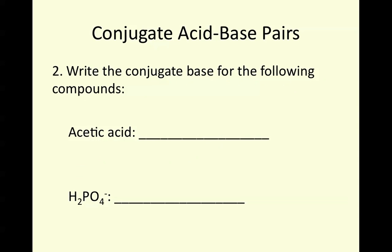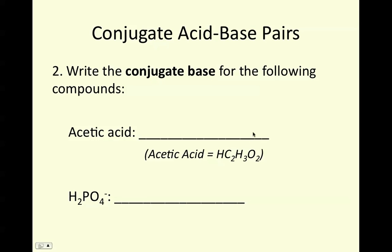You should also be able to write the corresponding conjugate base or acid for various substances. To write the conjugate base for acetic acid, remember we want it to differ by a hydrogen — acids give away a proton. So the conjugate base should differ by the decrease of one proton from our formula. Remember, we're not just giving away a hydrogen; it's a hydrogen ion or a proton, so we're also losing that positive charge, meaning it will take on a negative 1 charge.